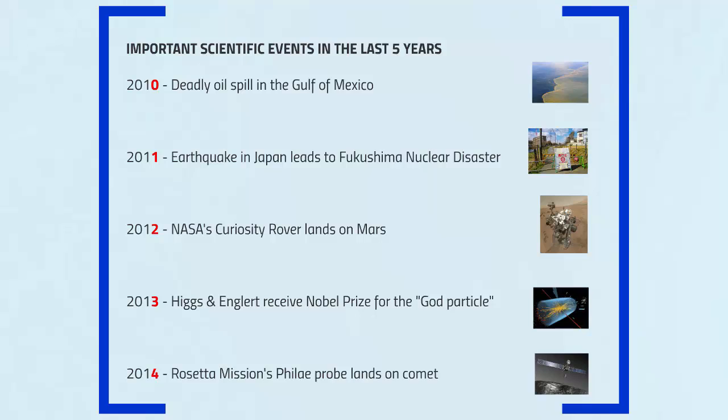The last event on the list is from 2014 — the Rosetta mission's Philae probe lands on a comet. I will demonstrate how I am going to associate it. I am wondering in my head that because of the successful landing on the comet, the scientists involved in the design and launch of that project must have felt like explorers sailing to uncharted territories on their boat with the sail. So there is the link between the digit 4, the sail, and the Rosetta mission.